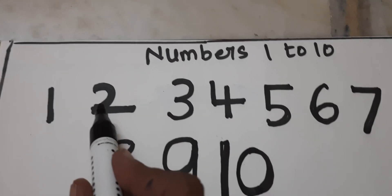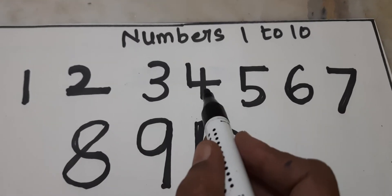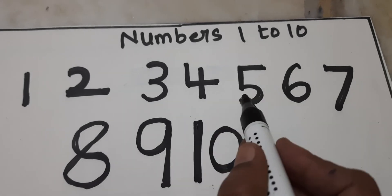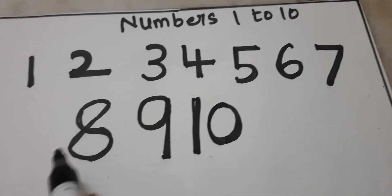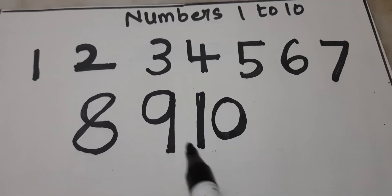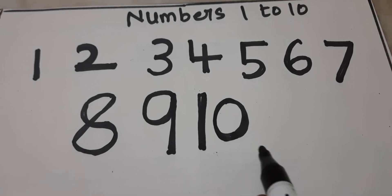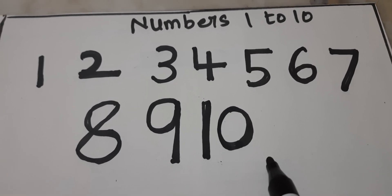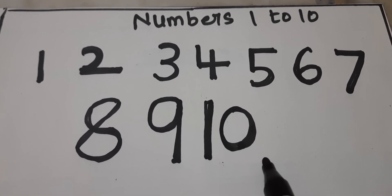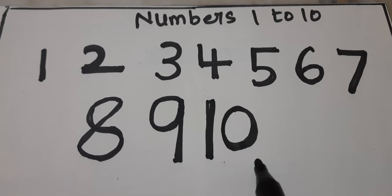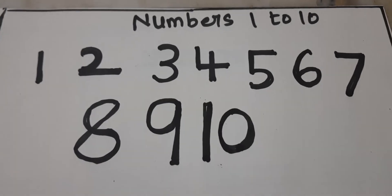1, 2, 3, 4, 5, 6, 7, 8, 9, 10. 1, 0 — 10. How to practice numbers 1 to 10. Thank you, kids.